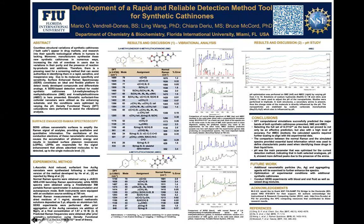The first part of the project involved running computational calculations using density functional theory, or DFT, to obtain simulated Raman spectra of both analogues, which we call 5ME and 4MEC for abbreviation. This Raman spectra produces different stretching bands that are proportional to the masses of the analytes. DFT allowed us to assign the peaks of both analytes using the 6-31G basis set.